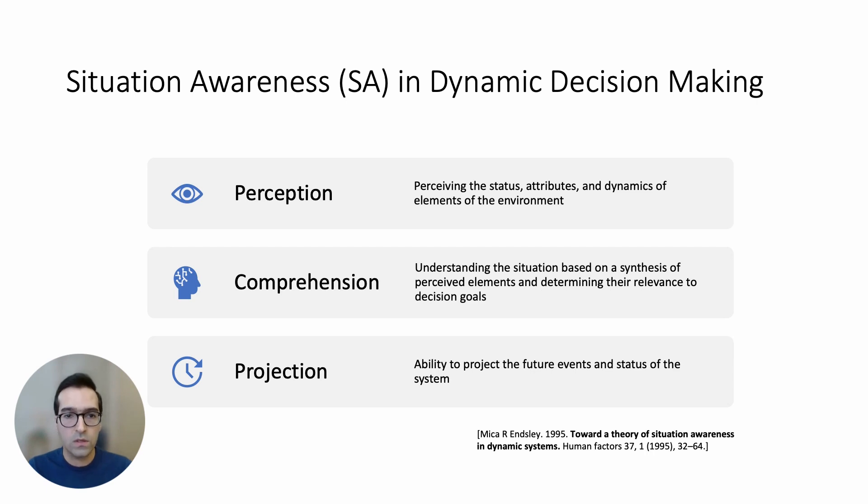This situation awareness model was specifically introduced for dynamic decision-making environments such as ours and describes how people's perception, comprehension, and projection affect their mental model development and drive their decisions. Perception refers to how people perceive the elements of the environment. Comprehension is about how people make sense of the environment based on the elements that they perceive. And finally, projection refers to how people project future events and status of the environment.